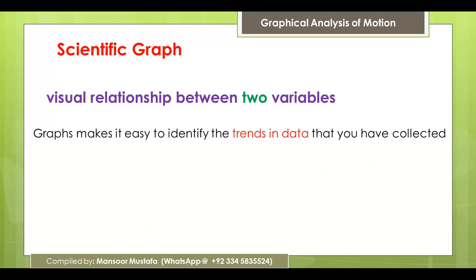For example, if you have different data points for speed, from the scientific graph you will get information about whether, with an increase in time, speed increased or decreased — and if it increased, whether it is increasing at a variable rate or at a constant rate. This type of representation you can obtain from scientific graphs.